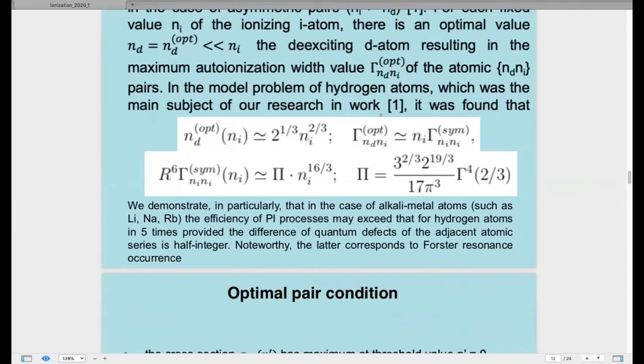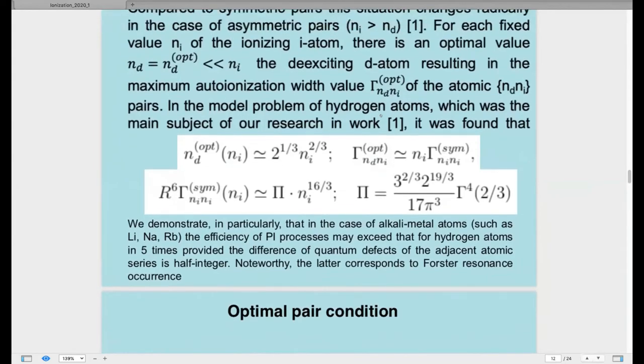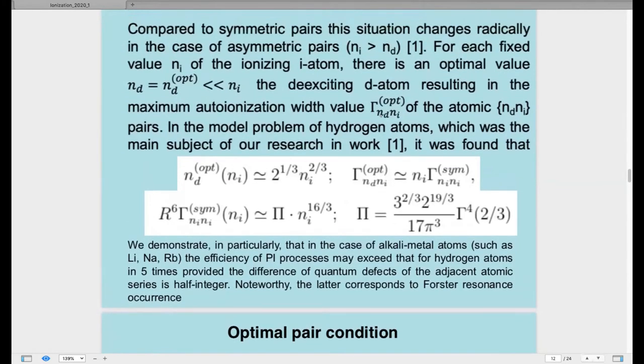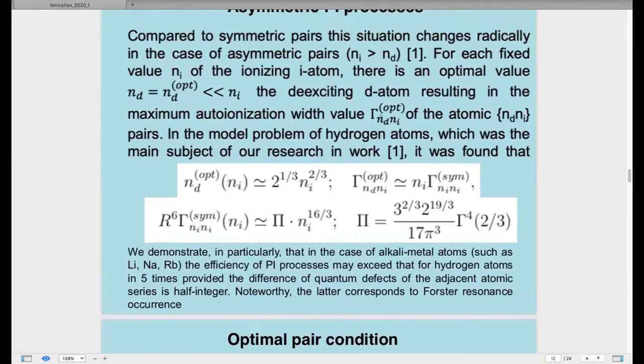we derived analytical formulas for hydrogen atom and later we demonstrated in particular that in the case of alkali metal atoms such as lithium, sodium and rubidium, the efficiency of Penning ionization processes may exceed that for hydrogen atoms by five times provided the difference of quantum defects of the adjacent atomic series is half integer.